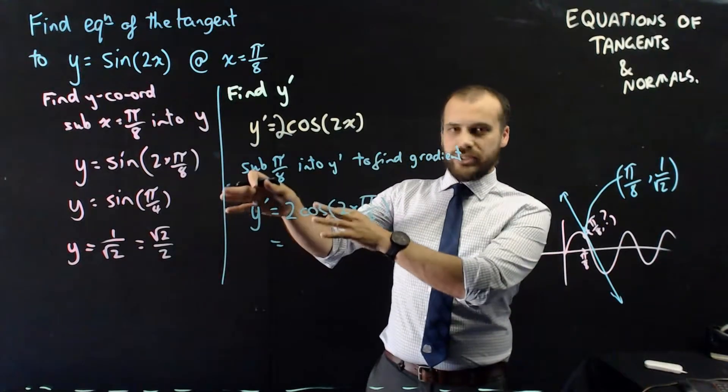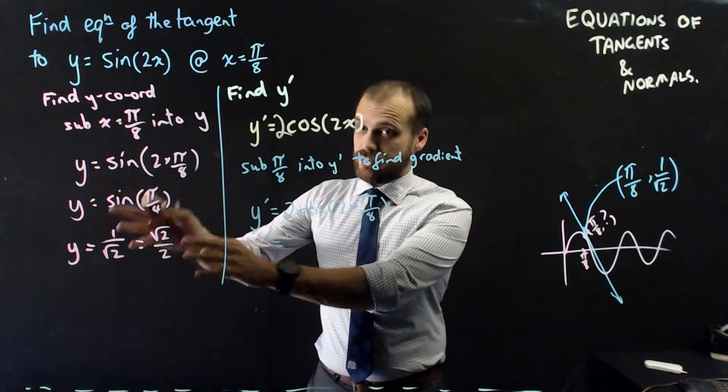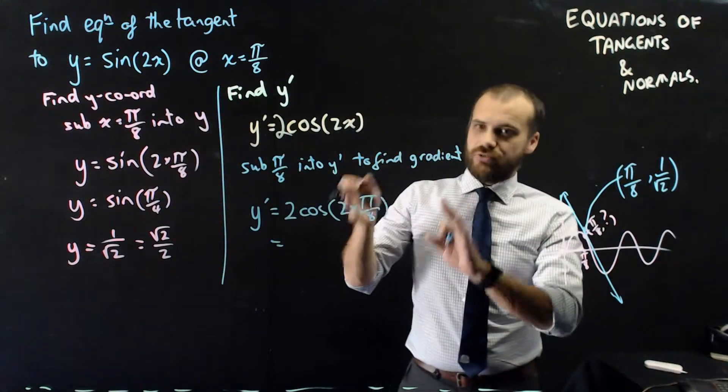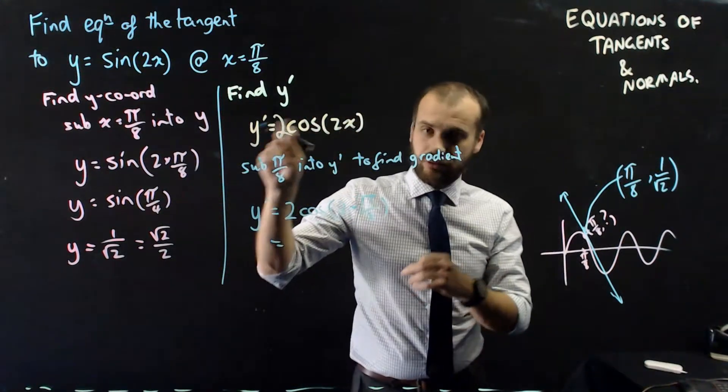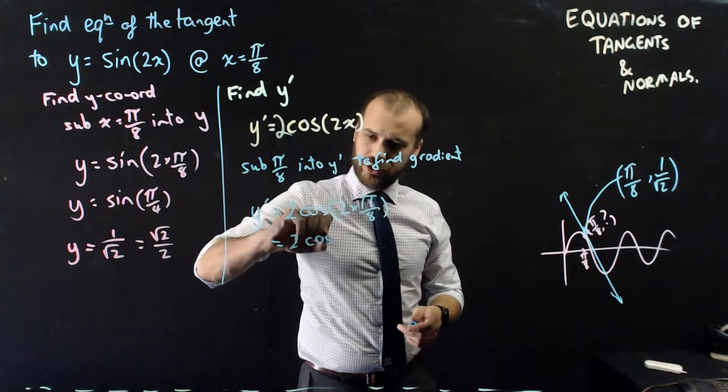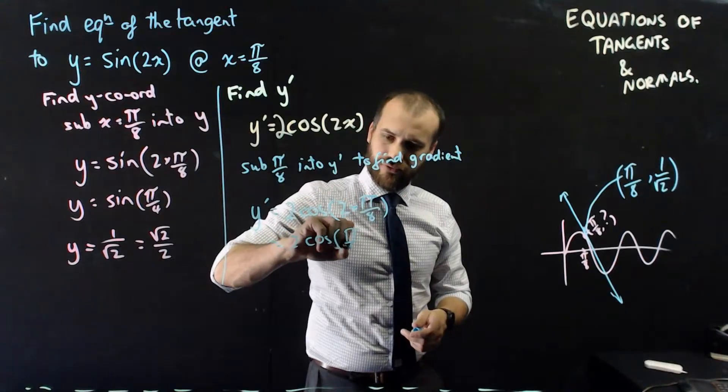We've got y dash equals 2 cos 2 times π on 8. This looks very similar to that work there. This was finding the y-coordinate because I subbed it into the original function. This is finding the gradient because I'm subbing it into the gradient function.